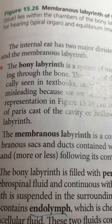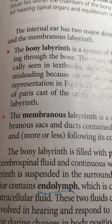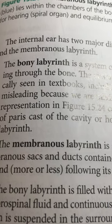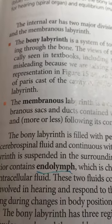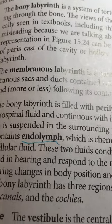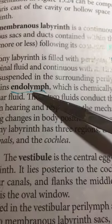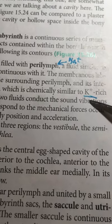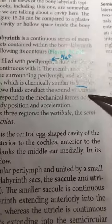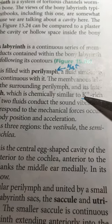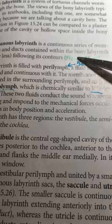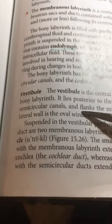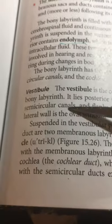The bony labyrinth has a configuration of membrane within it. Just lining the bony labyrinth we have the perilymph — P-E-R-I — and then the membranous labyrinth contains the endolymph. The perilymph is sodium-rich and the endolymph is potassium-rich. There is a sodium-calcium pump throughout the system keeping sodium out in the perilymph and potassium in the endolymph.